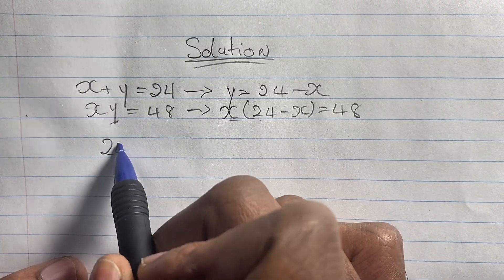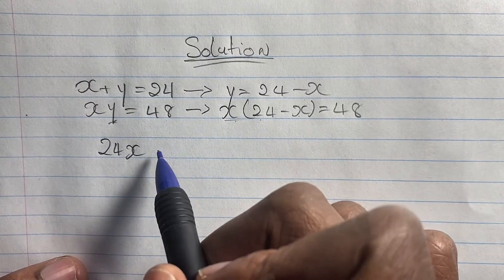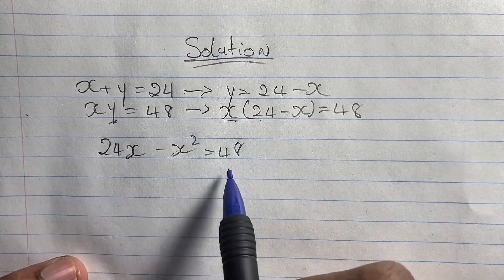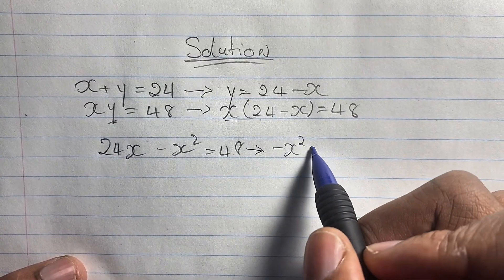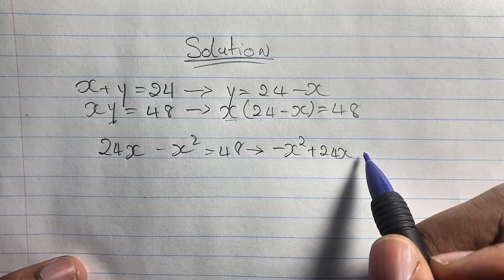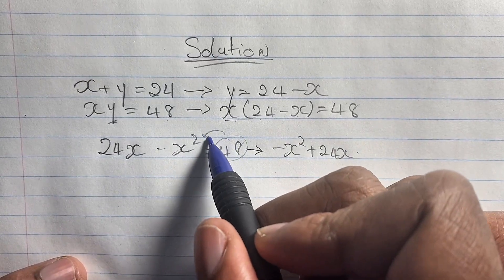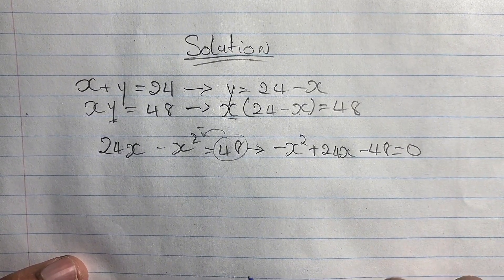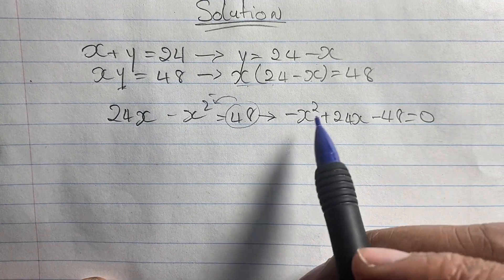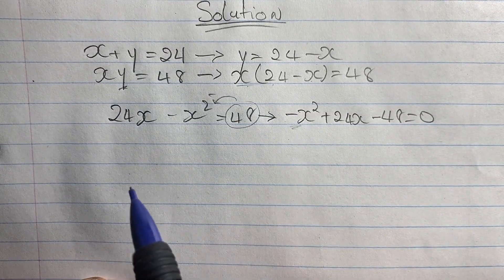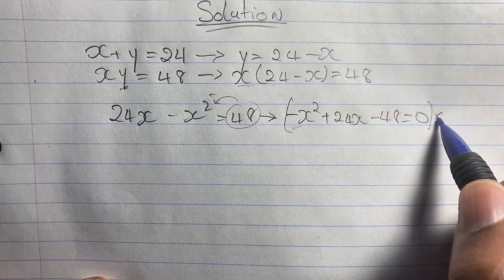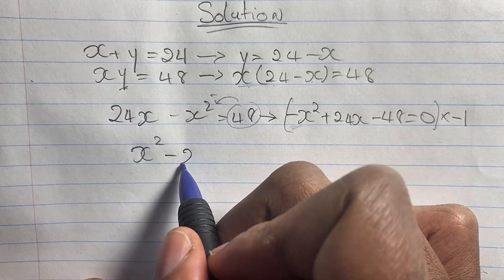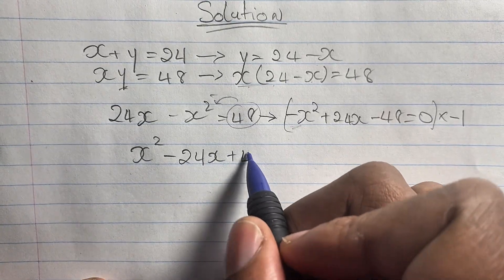We use our distributive property: x times 24 is 24x and x times negative x is negative x squared, and this is equal to 48. As we write this equation, we can see a pattern — a quadratic expression is being formed. This means we can write our equation as negative x squared plus 24x, and 48 comes over as negative 48, equal to 0. We then multiply our equation by negative 1 to get a positive x squared, giving us x squared minus 24x plus 48 equals 0.